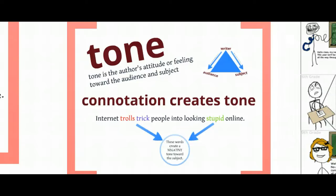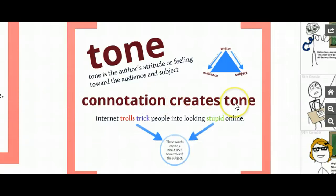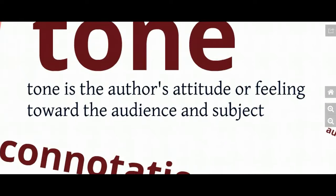The next step to understanding connotation is to understand that when you think about the connotation of words in a larger piece of writing, all of that connotation together creates tone. Tone is the author's attitude or feeling toward the audience and the subject of the piece of writing. The tone shows us how the author feels about the subject they're talking about — are they happy, excited, angry, upset? How do they feel toward the audience? Are they mad, hopeful? We can determine this tone by looking at connotation. Remember the rhetorical triangle.